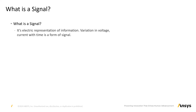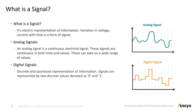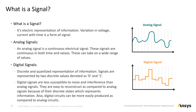Before understanding signal integrity, let's first understand what a signal is. A signal is an electrical representation of information, with variations in voltage or current carrying the information. There are two types of signals. Analog signals: these are continuous representations of information and can take a wide variety of values at any point in time. Digital signals: these are discrete and quantized representations of information, represented by two discrete values denoted by zero and one. Digital signals are less susceptible to noise and interference than analog signals, and they are easier to reconstruct due to their discrete states. Digital circuits can also be more easily produced compared to analog circuits.